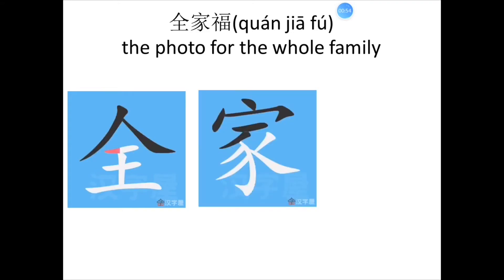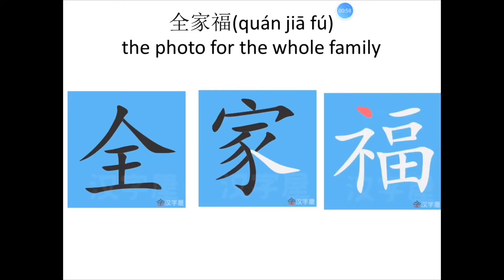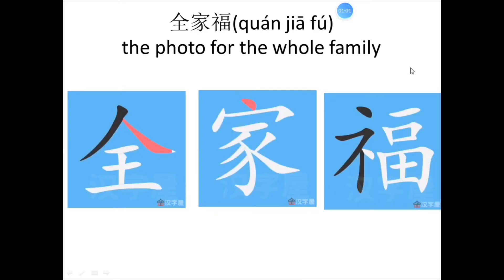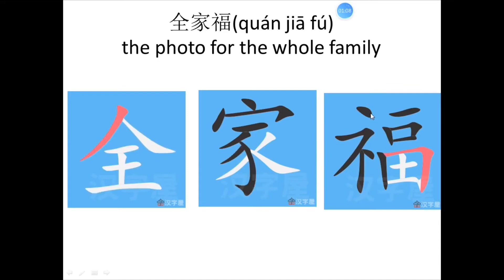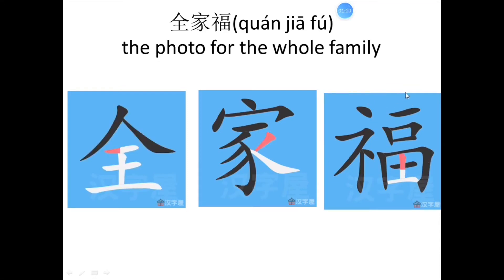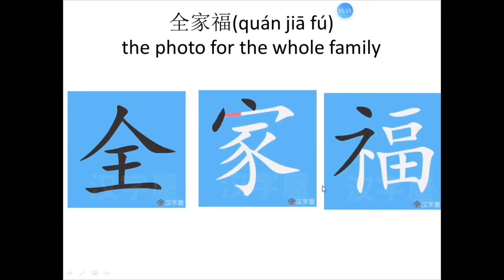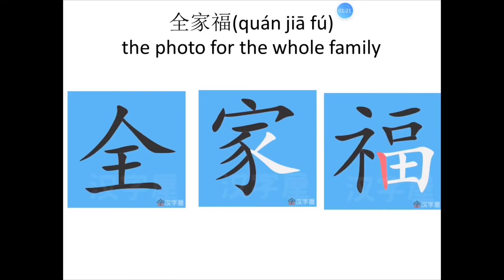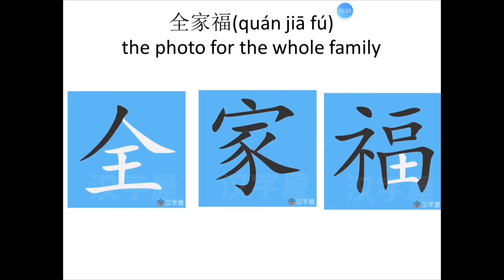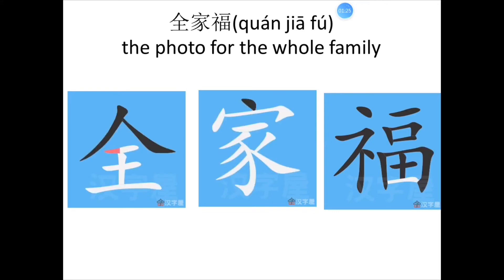you have already known, right? Now, let's see how to write 福。 You can see there are two parts: left one, right one. 一，二，三，四，五，六，七，八，九，十，十一，十二，十三。